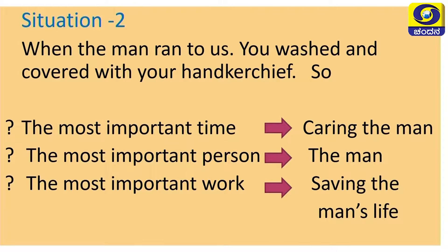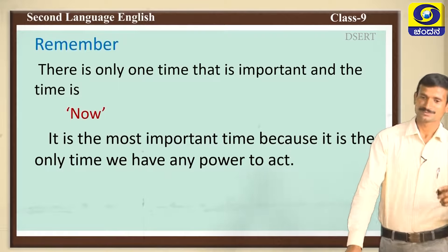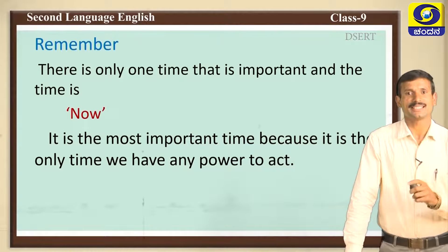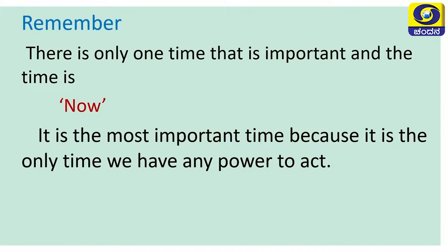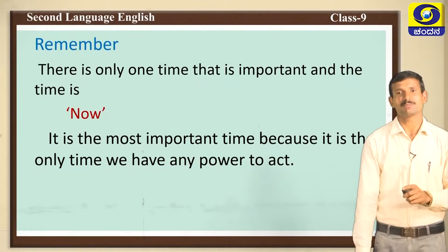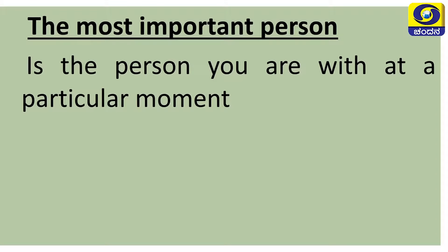The hermit explains everything: there is only one time that is important, and that time is now — we should act now. It is the most important time because it is the only time we have the power to act. The most important person is the person you are with at a particular moment. In that particular moment, whoever comes to us is the most important person.